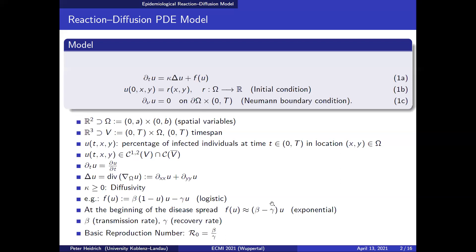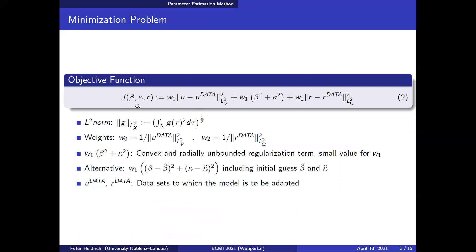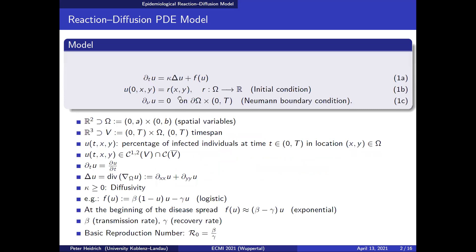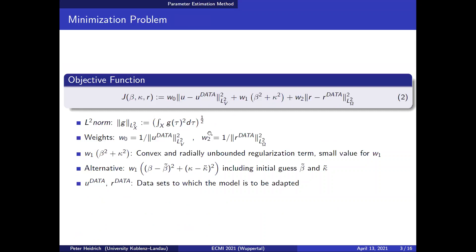How should it be fitted? We introduce an objective function depending on the transmission rate, the diffusivity, and the initial condition r, which should also be fitted since we assume we have noisy data and cannot trust the first data point at time zero. This objective function includes L2 norms — defined by this term — so we want to fit the model to a data set.